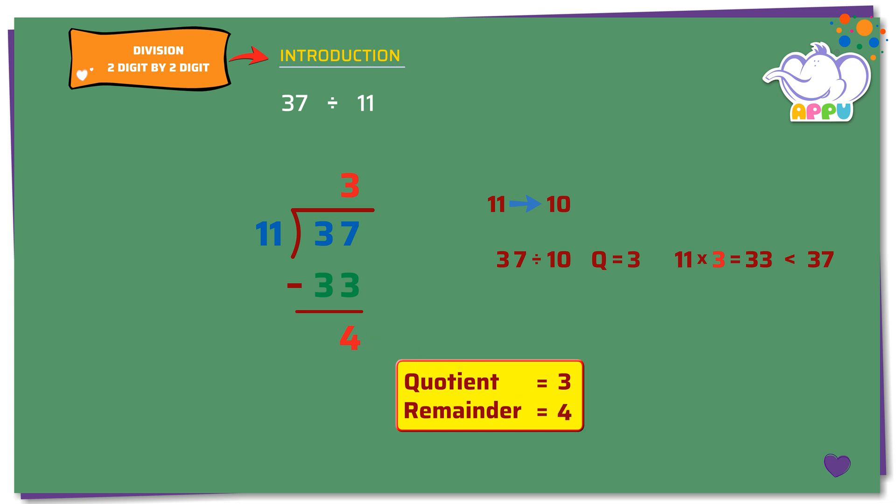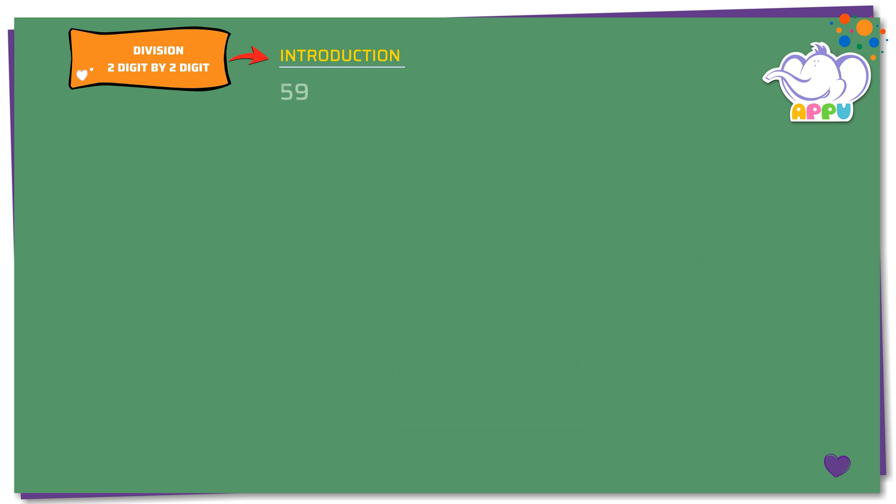Let's look at another example. 59 divided by 27. We write the division bracket and write 27 outside the bracket and 59 inside the bracket.